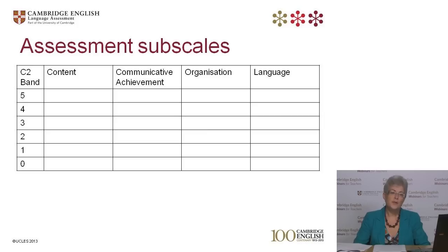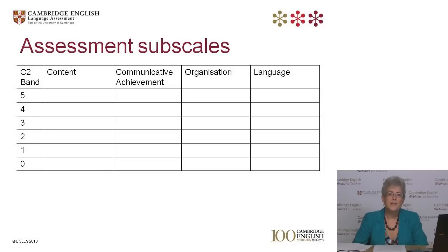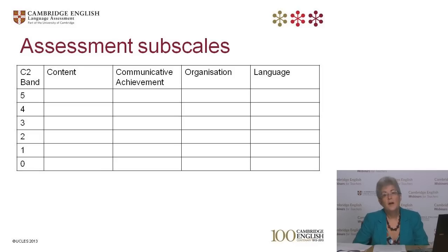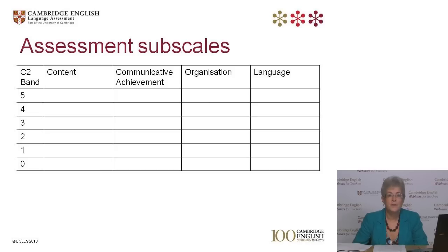For each of these sub-scales, candidates are awarded a band between 0 and 5. Band 3 represents a performance at C2 level — the required level, which is obviously Proficiency. Bands 4 and 5 are above the level, and bands 0 to 2 are below C2 level. Band 1 is C1 level, the Advanced certificate.